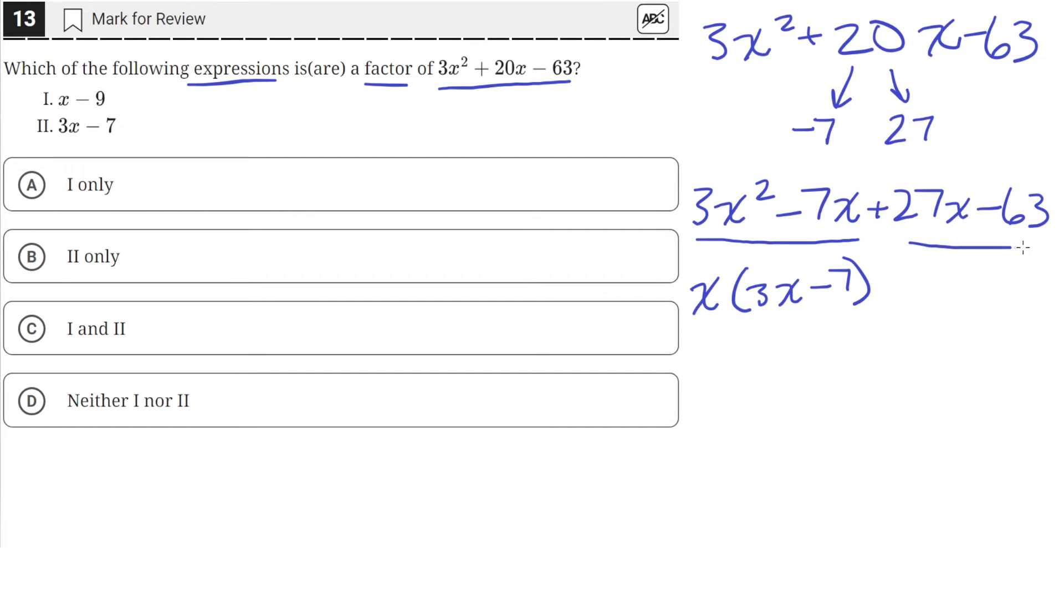And then from these two terms, we can factor out a 9. So when we factor out a 9, we're left with 3x minus 7.